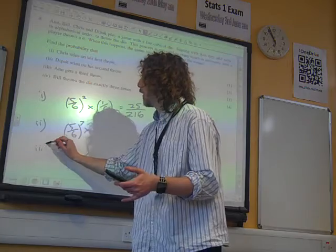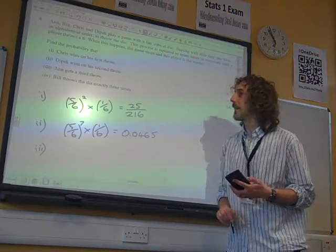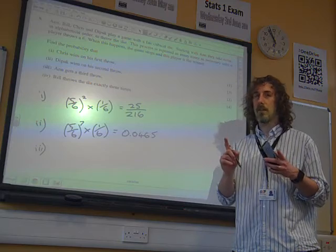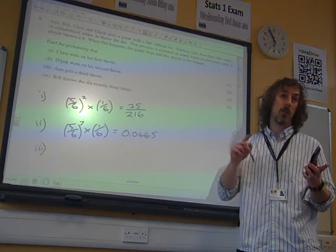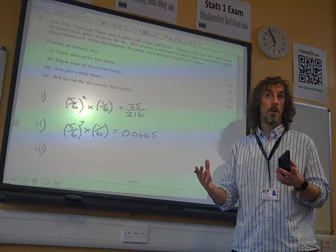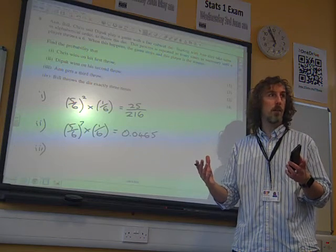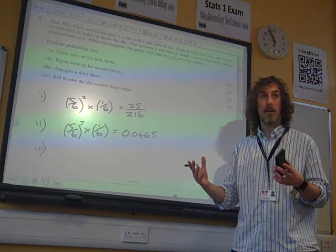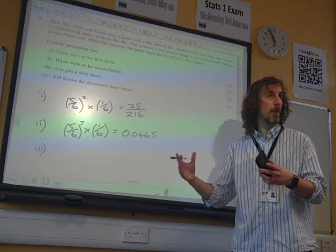OK, part three. What's the probability that Anne gets a third throw? Now this is interesting, isn't it, because this isn't saying that she wins on the third throw, it's just that she gets a third throw. So actually we don't need anybody to have won, we don't care about winning or not in this one. We just need them all to have lost up to that point.